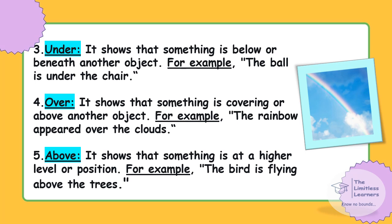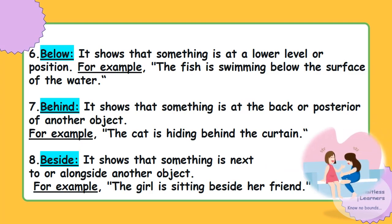'Over' — it shows that something is covering or above another object. For example: the rainbow appeared over the clouds. 'Above' — it shows that something is at a higher level or position. For example: the bird is flying above the trees.